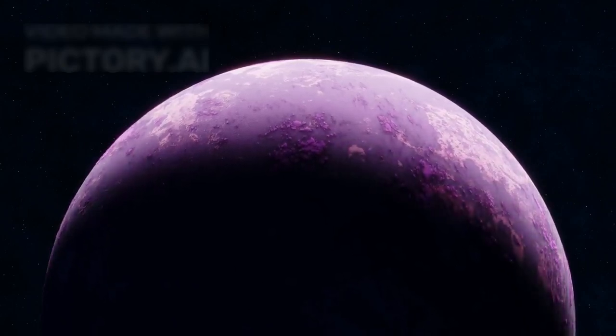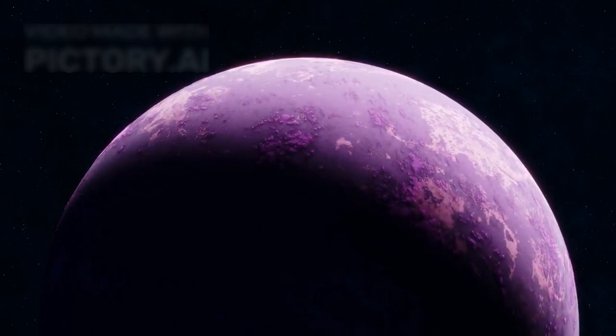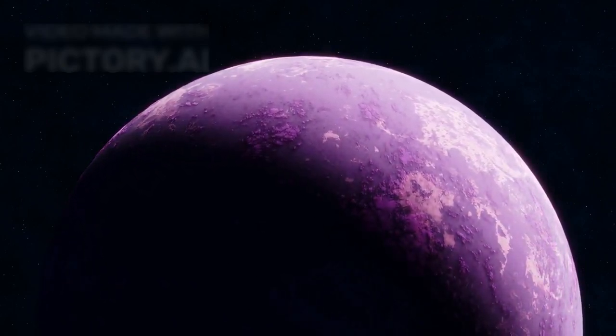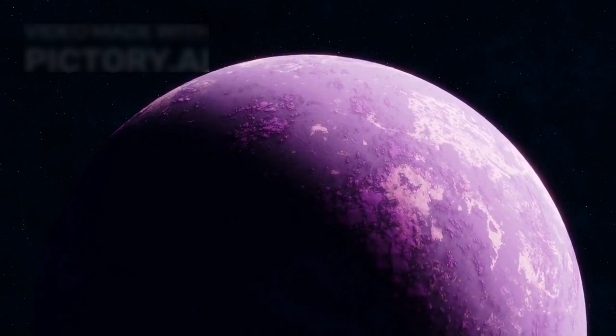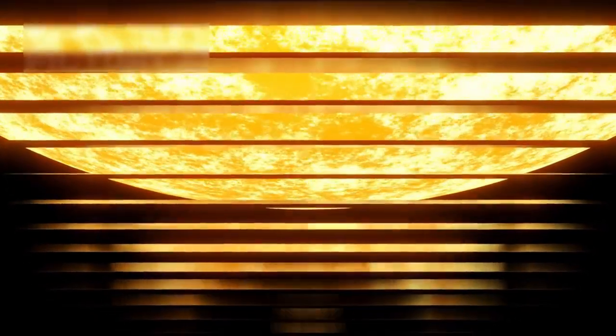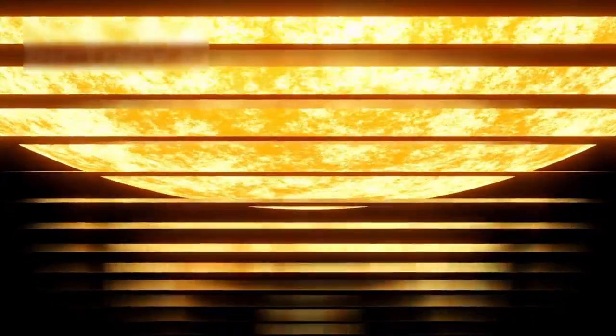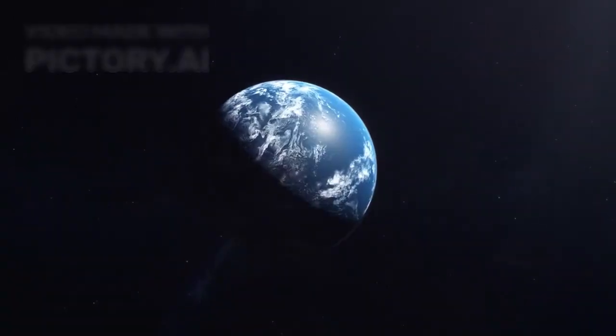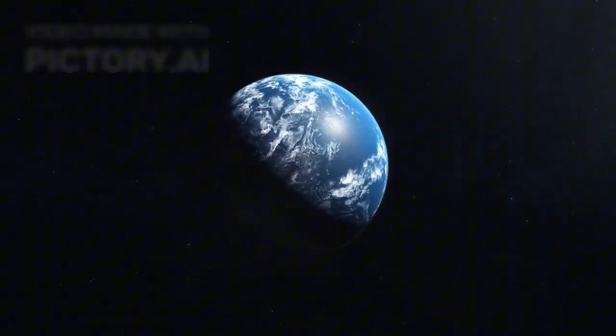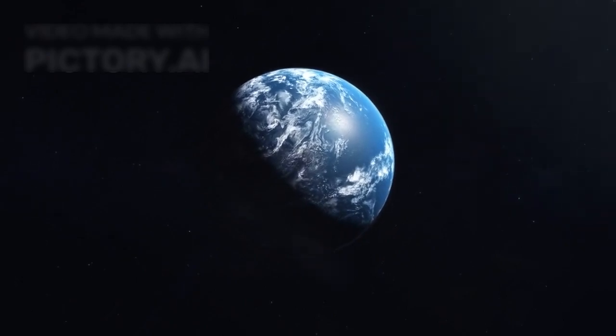The bright side scorches under constant light, while the night side stays trapped in cold shadows, deep and unyielding. In between is the so-called twilight zone, a place of faint glow and mysterious promise. In this dim strip where light fades into shadow, temperatures may be just right for water to remain liquid.